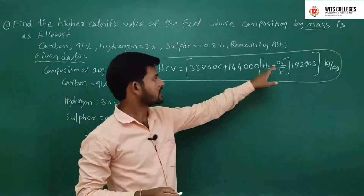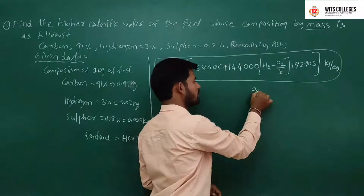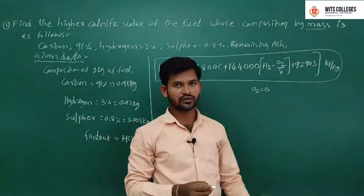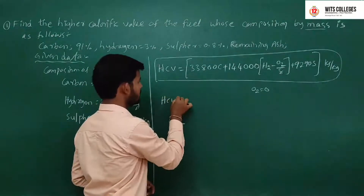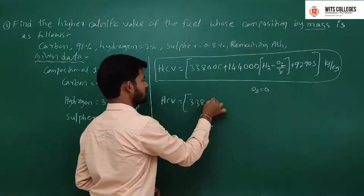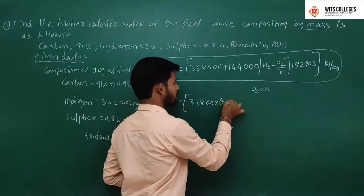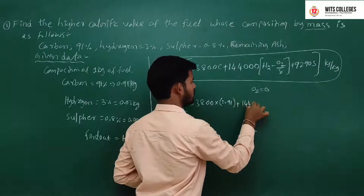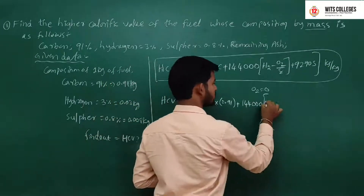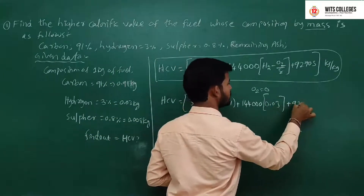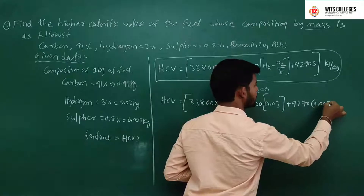Carbon is given, hydrogen is given, oxygen is not given so O₂ = 0, and sulphur is also given. Substituting all values: HCV = 33,800 × 0.91 + 144,000 × 0.03 + 9,270 × 0.008.